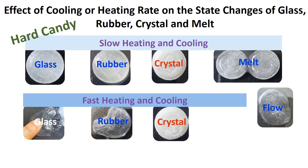In this slide, we can observe the effects of heating or cooling rate on the state changes — that is, glass, rubber, crystal, melt, and flow. In the upper layer, the effects of slow heating and cooling rates are shown. Consider candies in the glassy state: slow heating can transform from glassy state to rubbery state. Further heating, the rubbery state could transform to a crystalline state, then melt, then flow. One important point: crystalline state could not be transformed to rubbery if cooled, since crystallinity is the equilibrium state. However, crystalline state could be transformed to a melting state upon heating, and reverse cooling could transform back to crystallinity.